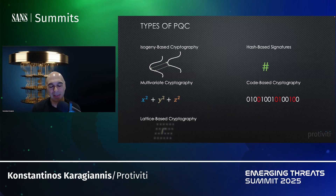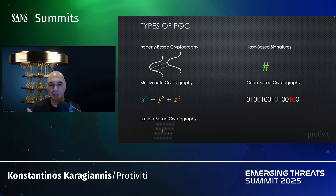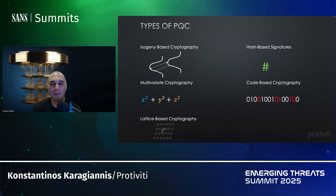NIST has released some standards for post-quantum cryptography. There are different types of math that quantum computers are not very good at reversing. The one you see there — code-based cryptography — will actually be the next cipher up to be standardized. It's called HQC. If you've ever worked with error-correcting code, you might have an idea of how this works: you literally send out a garbled message and the error-correcting code cleans it up. The one we'll be focusing on today mostly is lattice-based cryptography.